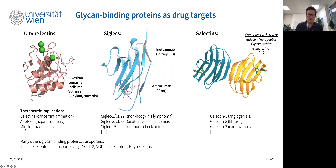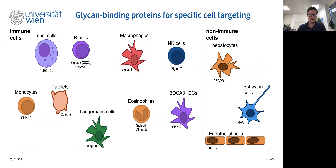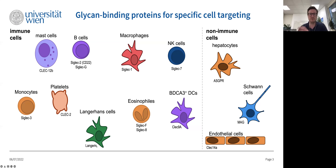The more we learn about carbohydrate-binding proteins, the more interesting they become for drug development. My main focus from a biological perspective is the development of targeted delivery vehicles. We benefit from the properties of many glycan-binding proteins that are specifically or at least overexpressed on certain cell subsets — for example, hepatocytes express the ASGPR, platelets have high expression of CLEC2, and our main focus are Langerhans cells, which have high expression of Langerin. We use these lectins for delivering drugs to specific immune cells to manipulate their physiology.